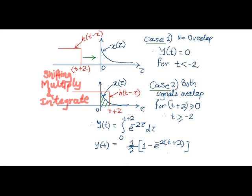As a first case, since both signals don't overlap, output of convolution is 0, which is decided by the instance t plus 2. Unless and until t plus 2 reaches up to 0, the overlap will not take place.